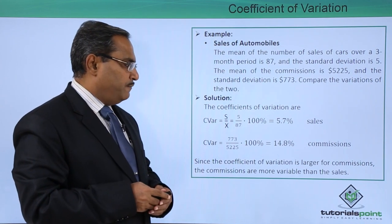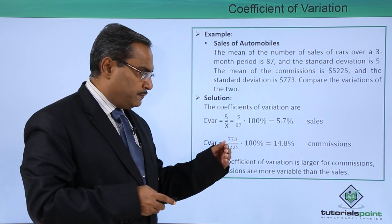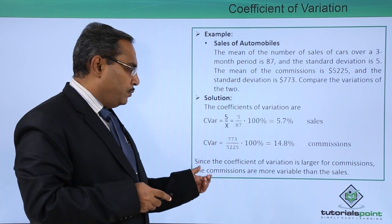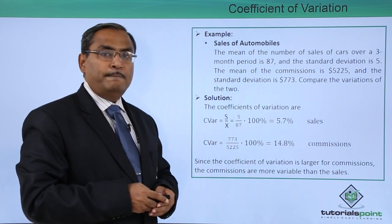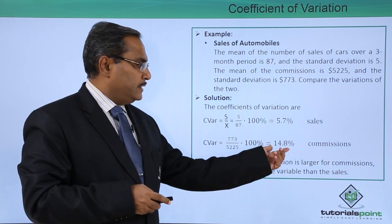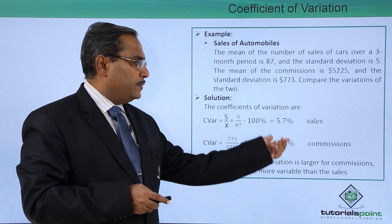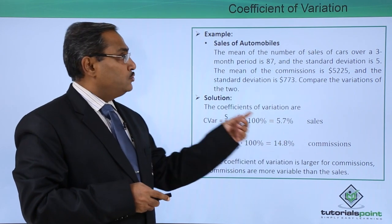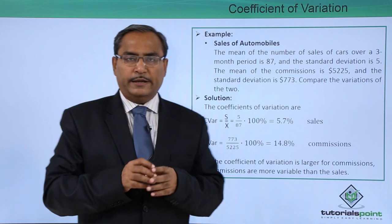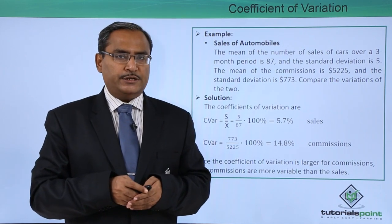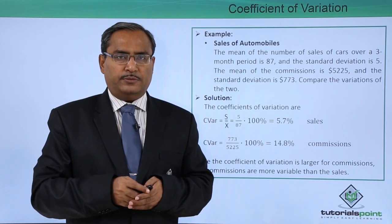Since the coefficient of variation is larger for commissions, the commissions are more variable than the sales. So, you can find that commission is more variable compared to the sales. In this way, we have defined what is the coefficient of variation. Thanks for watching this video. Thank you.